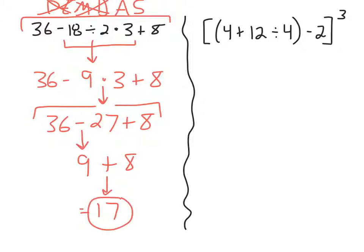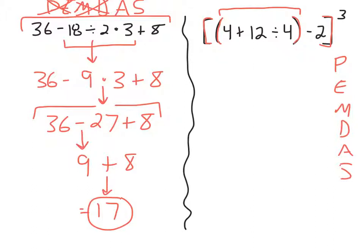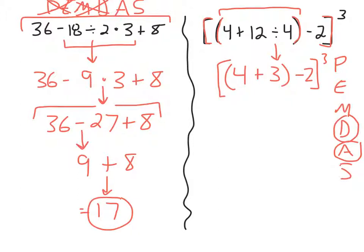One more. This one looks complicated because there are lots of grouping symbols, but let's not forget PEMDAS. It's always a good idea to jot it down on your paper and use it as a checklist. Are there any parentheses? Yes — in fact, there are nested parentheses. There are brackets, and inside the brackets are parentheses. So I go inside the brackets and see the inner parentheses. Inside I see add and divide. Division comes before addition, so I divide first: 12 divided by 4 is 3. I'm left with 4 plus 3 inside the parentheses. I finish that parentheses: 4 plus 3 is 7.